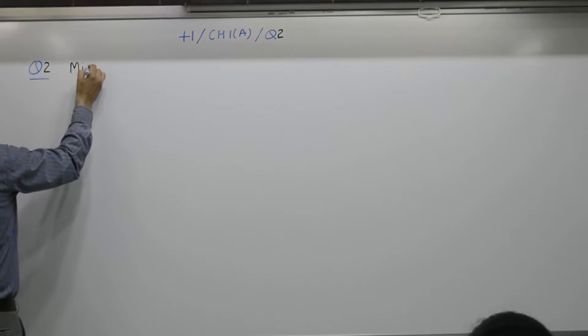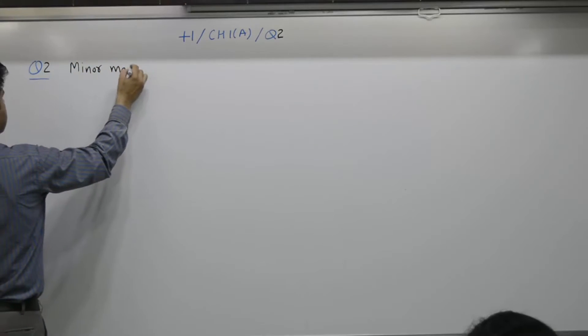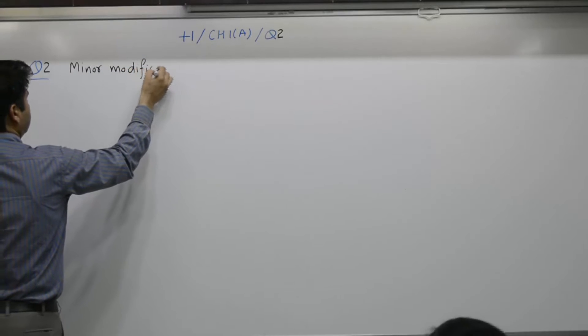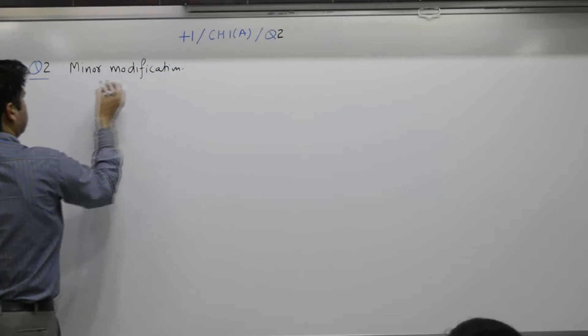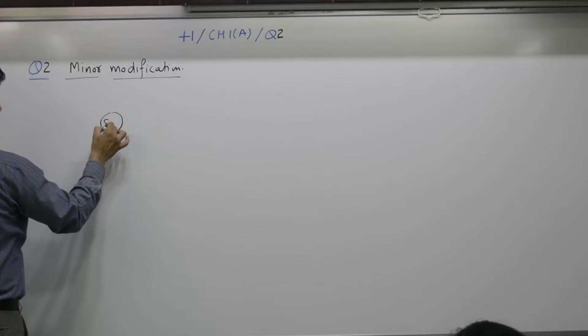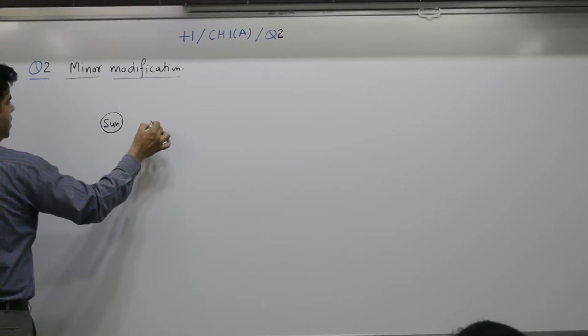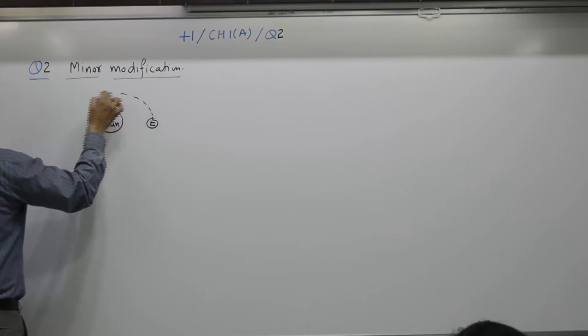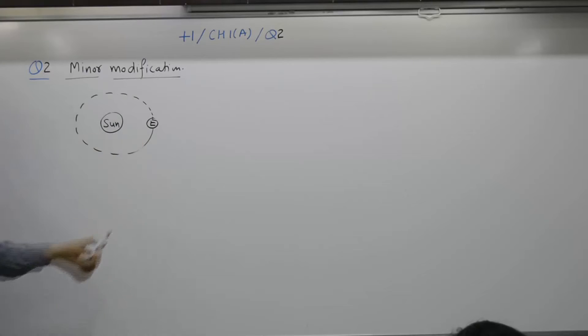Minor means what? Small, minor modification. Earlier it was assumed earth moves around the sun in a circular orbit. What is the fact today? Elliptical.